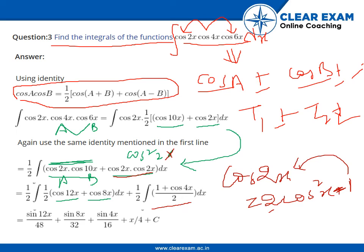Now the integration is pretty straightforward and pretty easy. The integration of cos 12x will be sin 12x by 12, but it will be multiplied by 4. Remember this thing: every integrand in this whole part will be multiplied by 1 by 4. And the integration of cos 8x will be sin 8x by 8, but 8 multiplied by 4 will be 32.